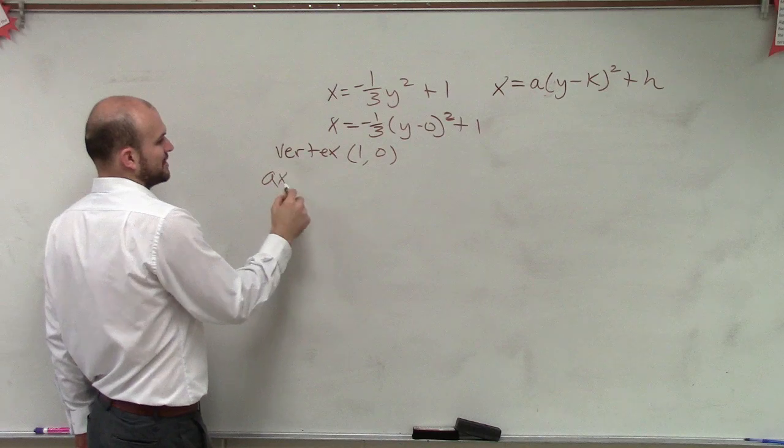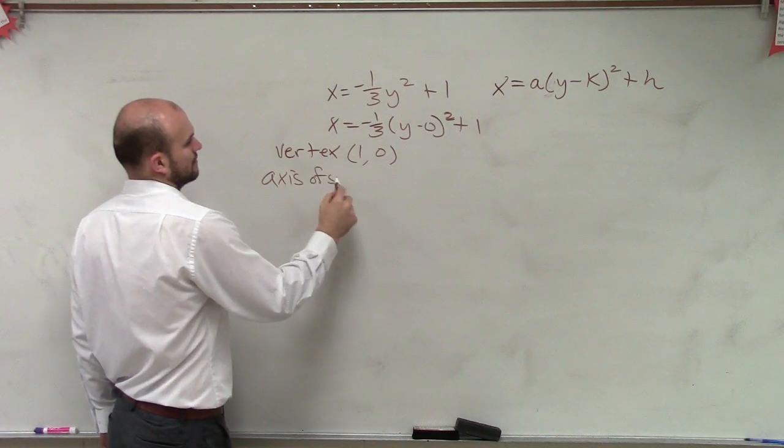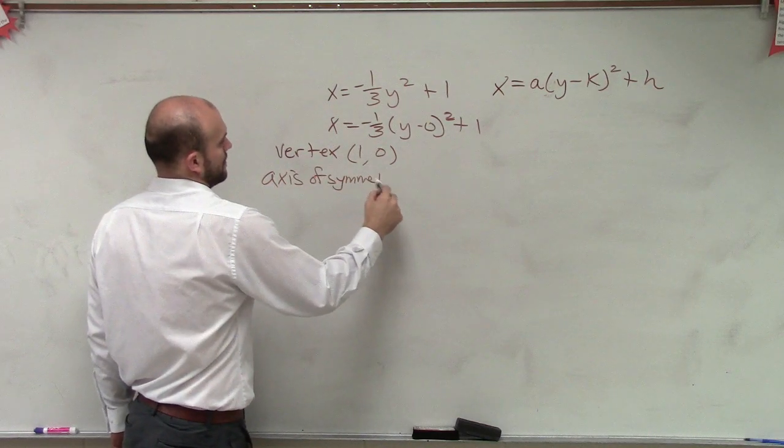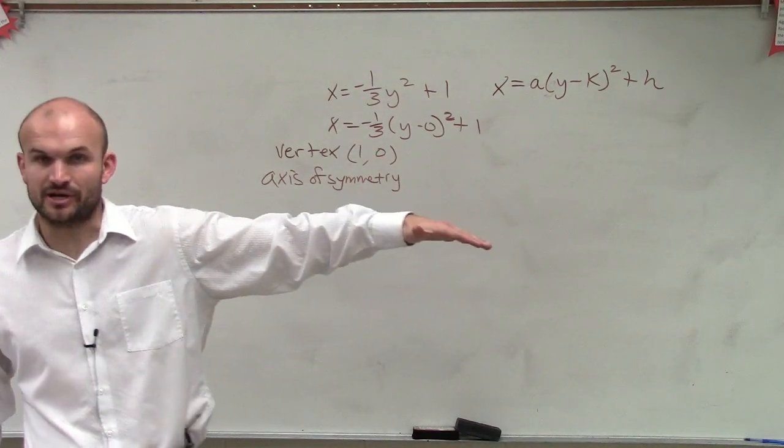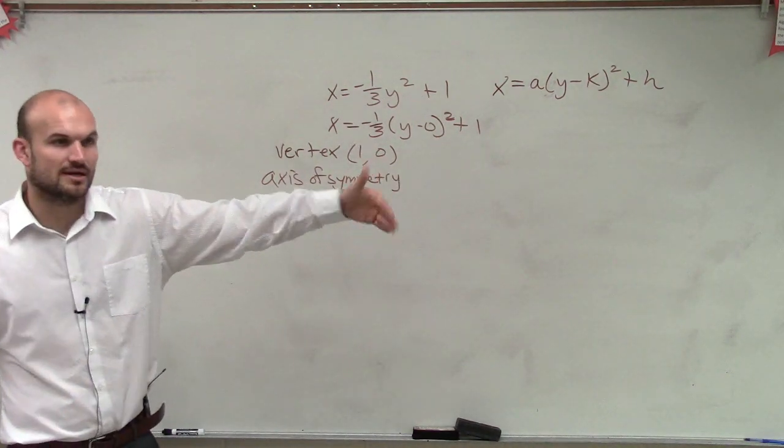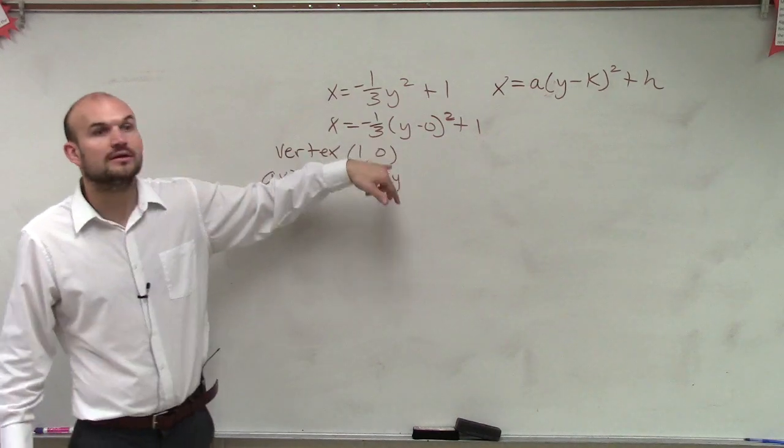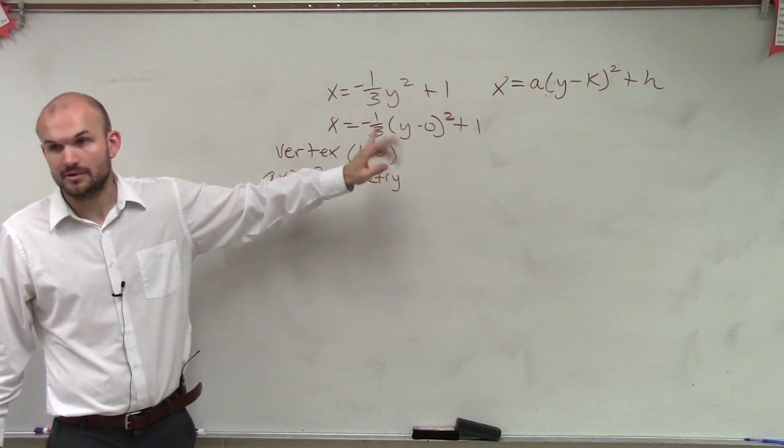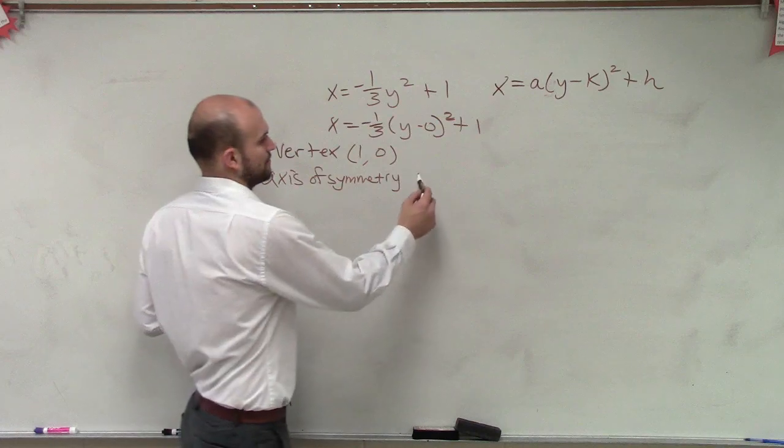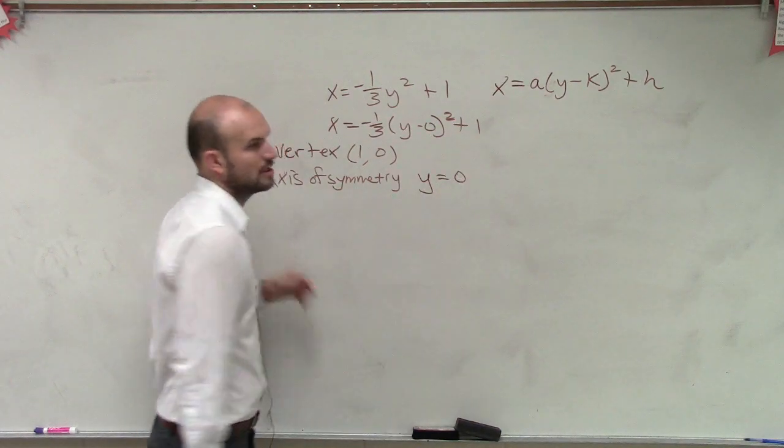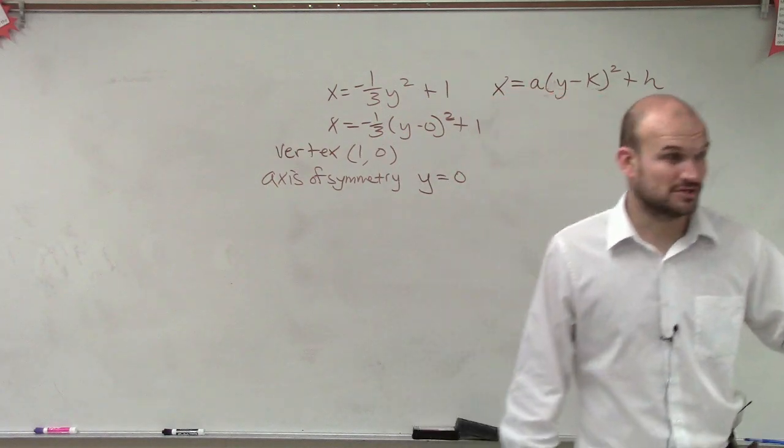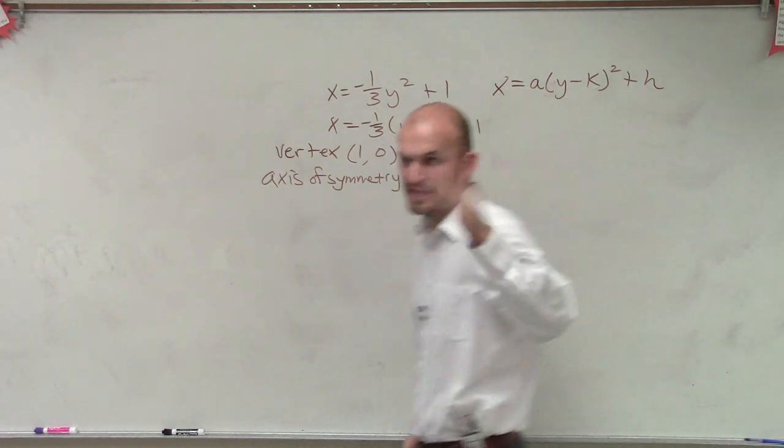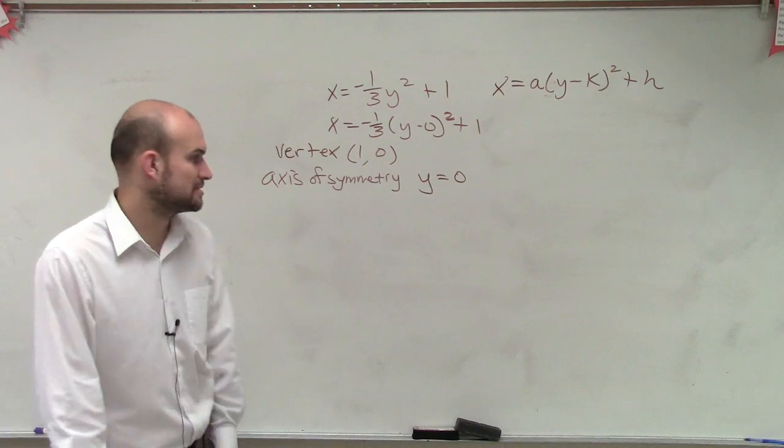Axes of symmetry. Again, we know that this is a horizontal axis of symmetry, so it's going to be y equals. And remember, y equals our k value, right? So y equals 0. If y equals your k value when you have a horizontal axis of symmetry, it equals your h value when you have a vertical. But then it'd be x equals would be the equation.